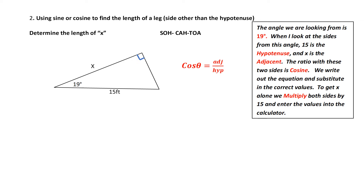You should have tried this example on your own. Number two: using sine and cosine to find the length of a leg other than the hypotenuse. I look at my triangle — it's a right triangle with angles and sides, so I'm pretty sure I can use trigonometry. My first step is to identify the angle I'm working from — that is 19 degrees. Next, I need to identify my sides. x is beside 19 degrees, which makes it the adjacent. 15 is across from the right angle, which makes it the hypotenuse.